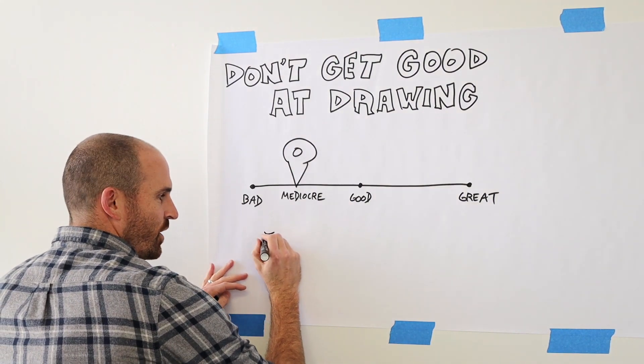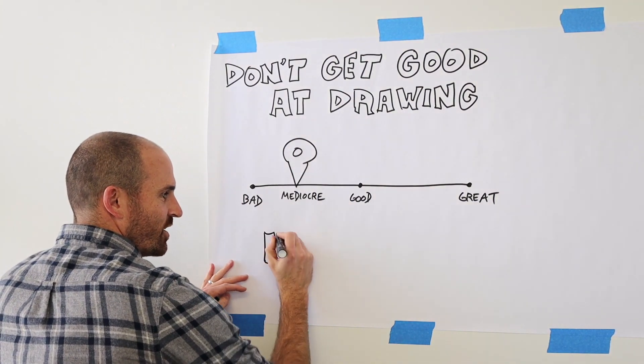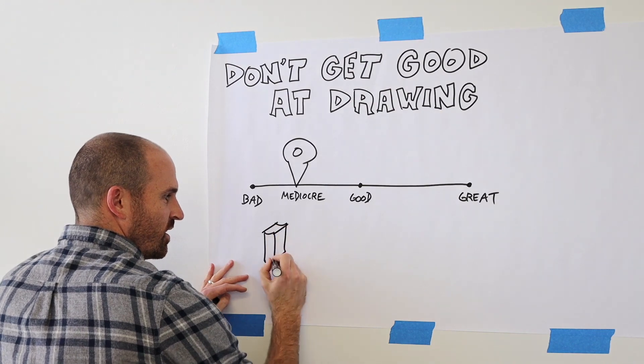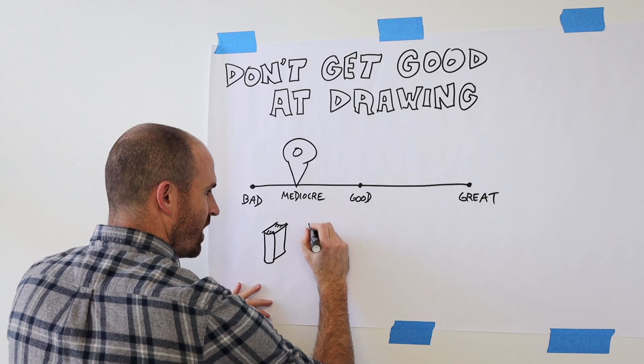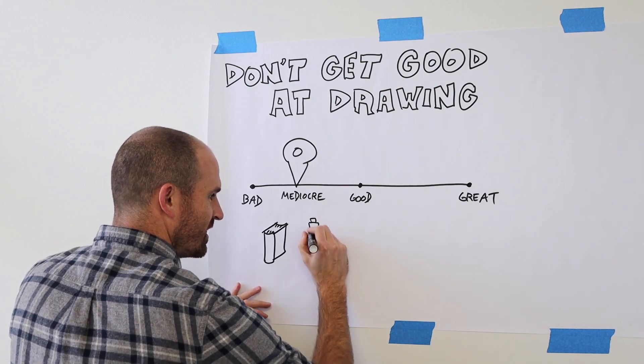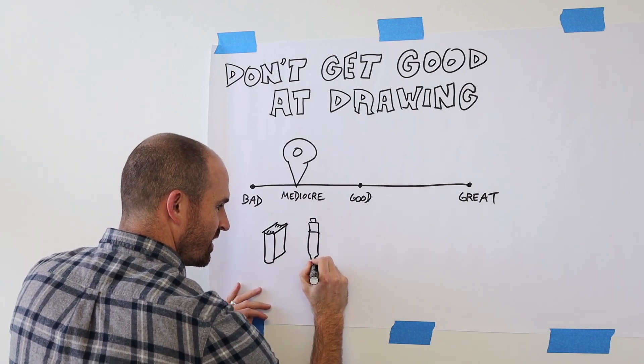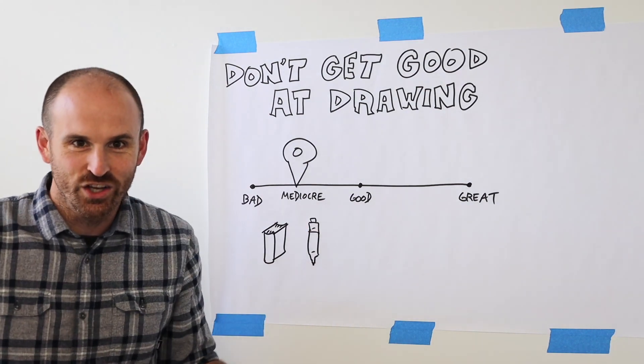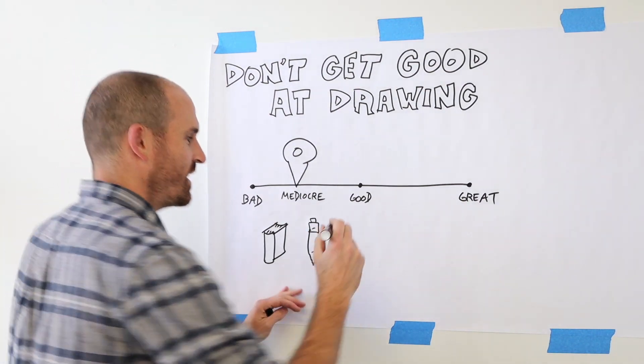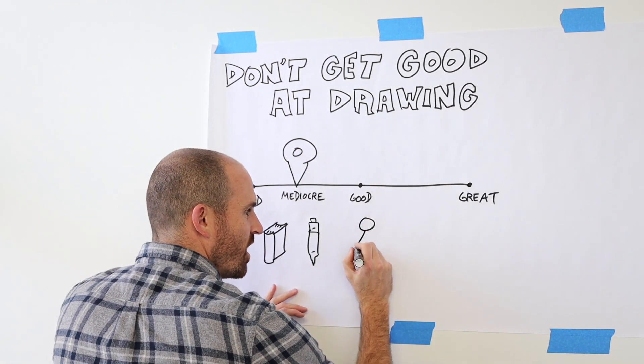If you want to draw a book, imagine it being on a shelf and draw it like that. If you want to draw a marker, draw it maybe like this and call it good. If you want to draw someone running, maybe draw it like this.